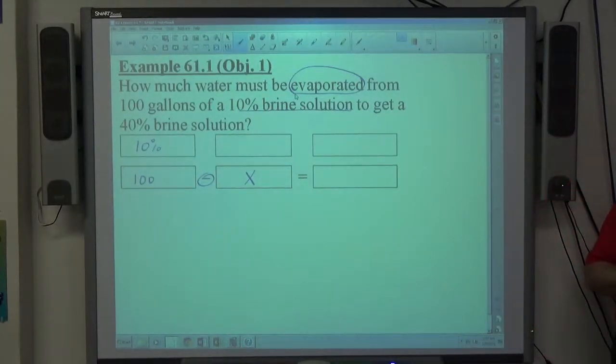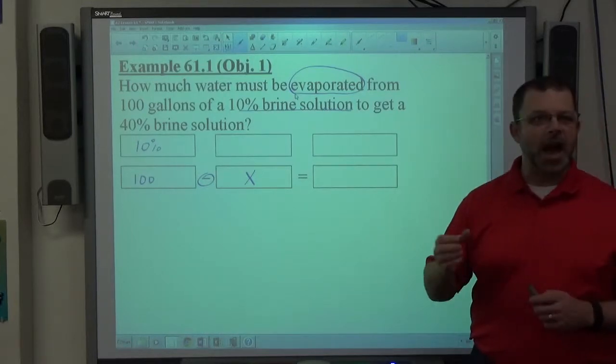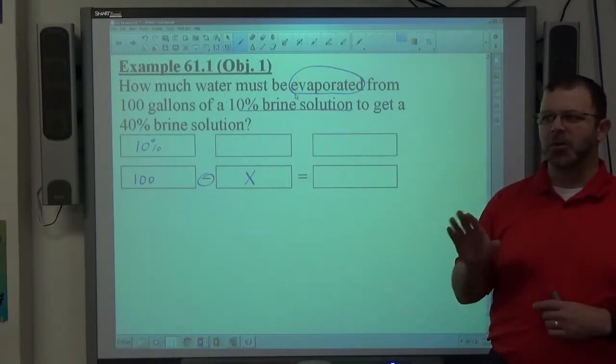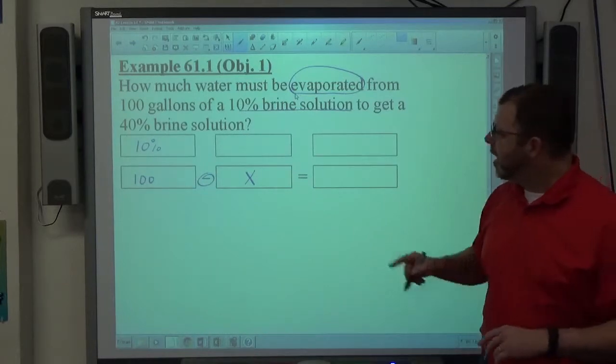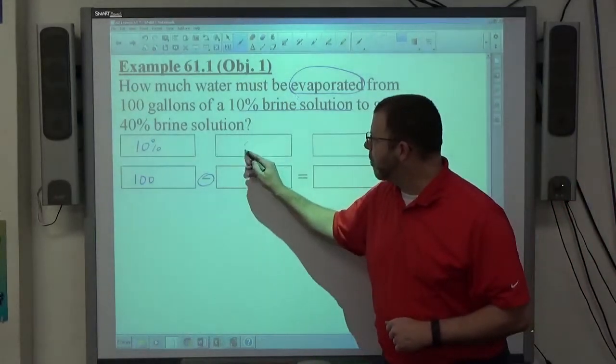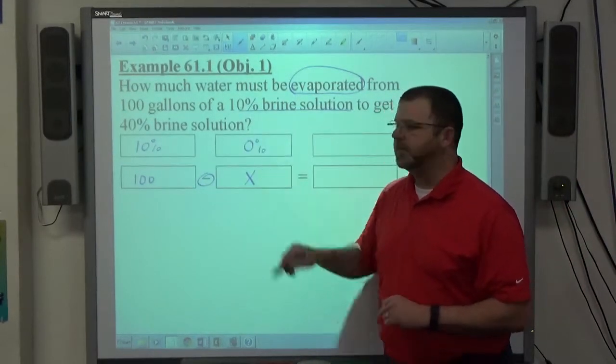What we don't have there is a percent. Okay, if you don't know what brine is, brine is a very salty substance. Water has no brine in it. If you get a cup of water out of your tap, it's water, no brine at all. Okay, so if we're evaporating water, we're evaporating 0% brine from that.